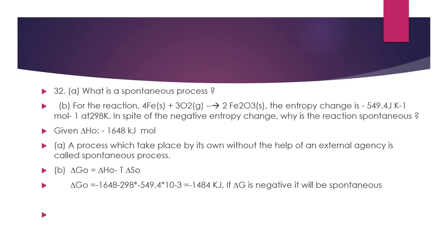Question 32: What is a spontaneous process? For a given reaction, ΔS = −549.4 J/K at 298 K — explain why the reaction is spontaneous despite negative entropy. Even though entropy is negative, the reaction will be spontaneous because the condition for spontaneity is that ΔG (change in Gibbs free energy) must be negative. Using ΔG = ΔH − TΔS and substituting the given values gives a negative ΔG, confirming the reaction is spontaneous.